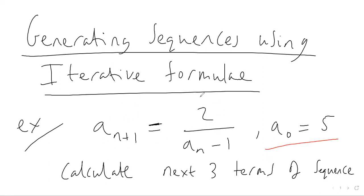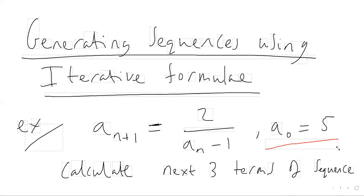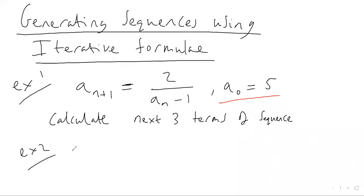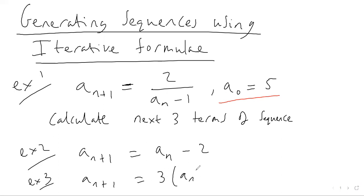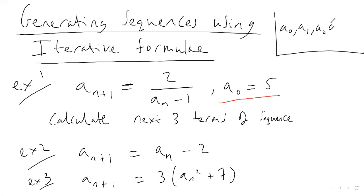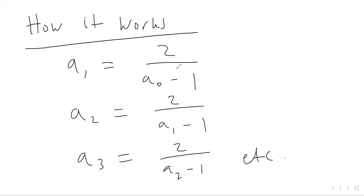You get a number from the formula, plug it back in, generate a new number, and plug that back in again. The formula can be anything — for example, a_(n+1) equals a_n minus two, or a_(n+1) equals three times a_n squared plus seven. The subscript notation just means the numbers in the sequence: a_zero is the first term, a_one is the second, a_two is the third, and so on.